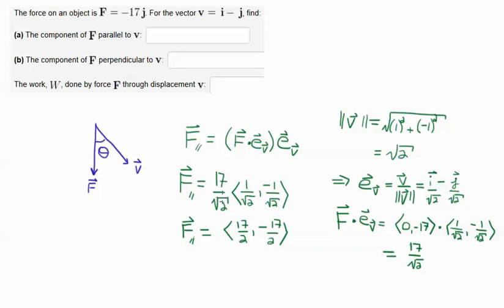So that's how we get this quantity here, and then the unit vector along the V direction we've just computed is 1 over root 2 minus 1 over root 2. So if I just distribute the scalar into this vector, I get this vector here, and the projection of F along V is 17 over 2 and minus 17 over 2.